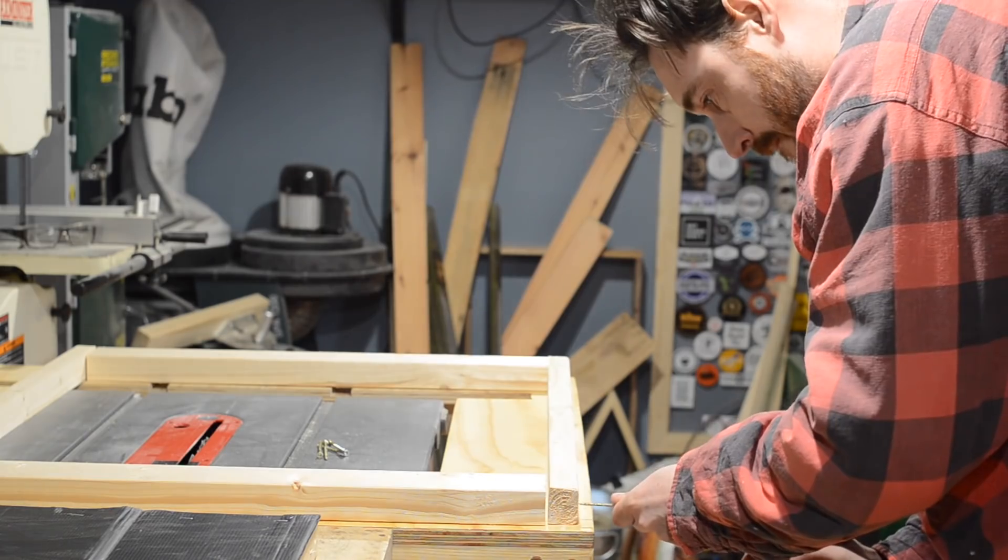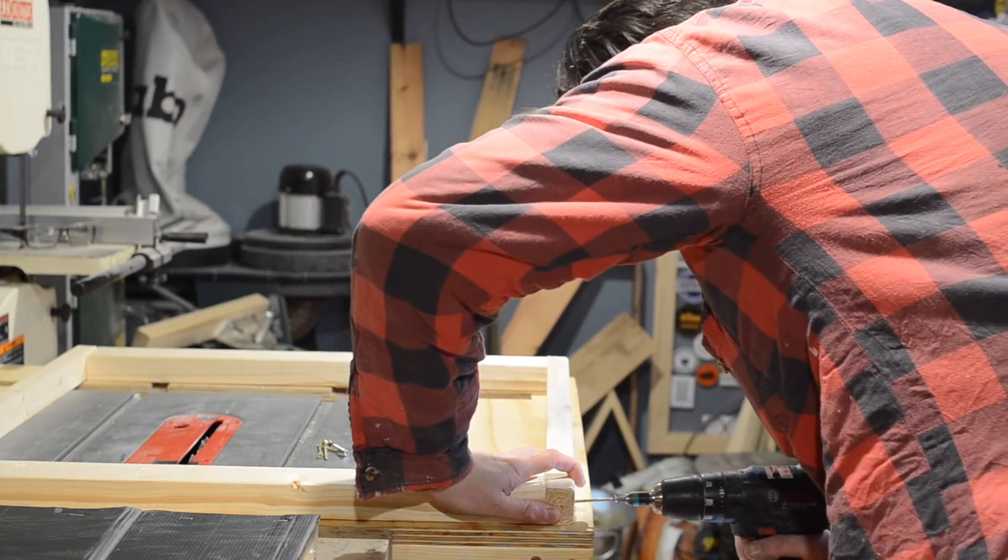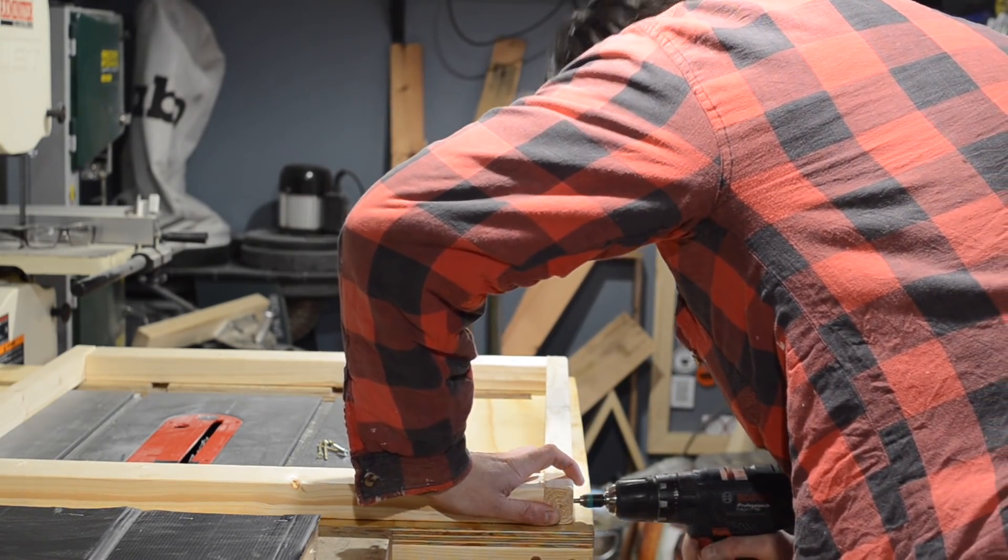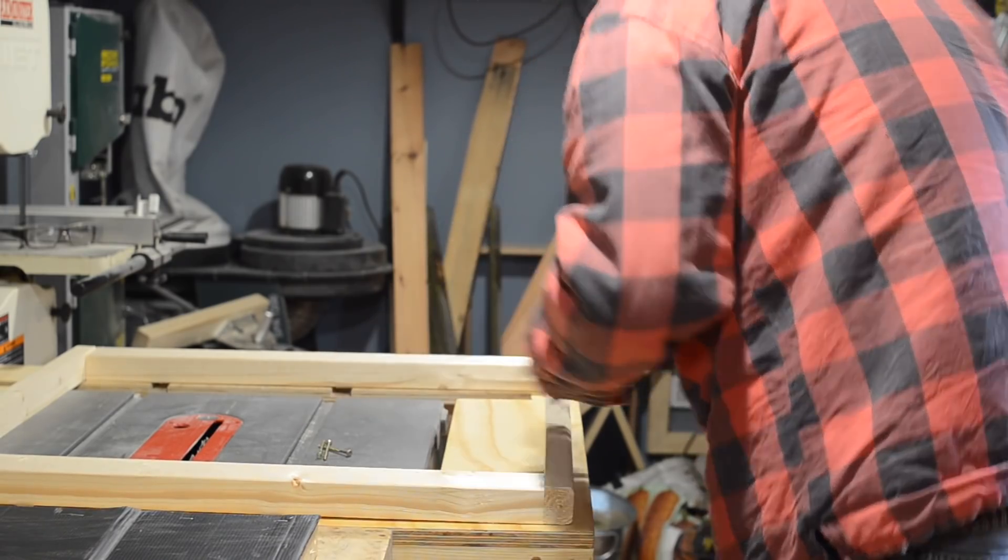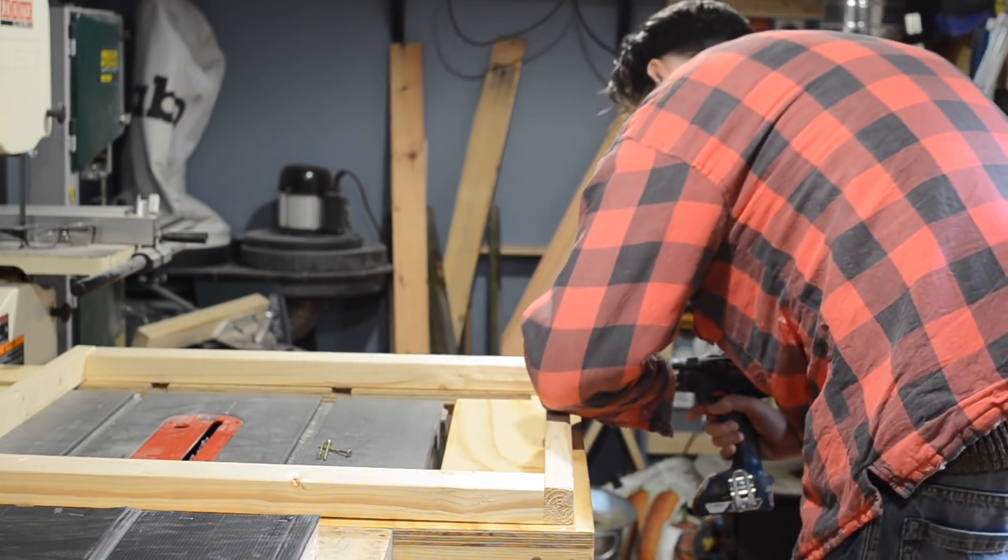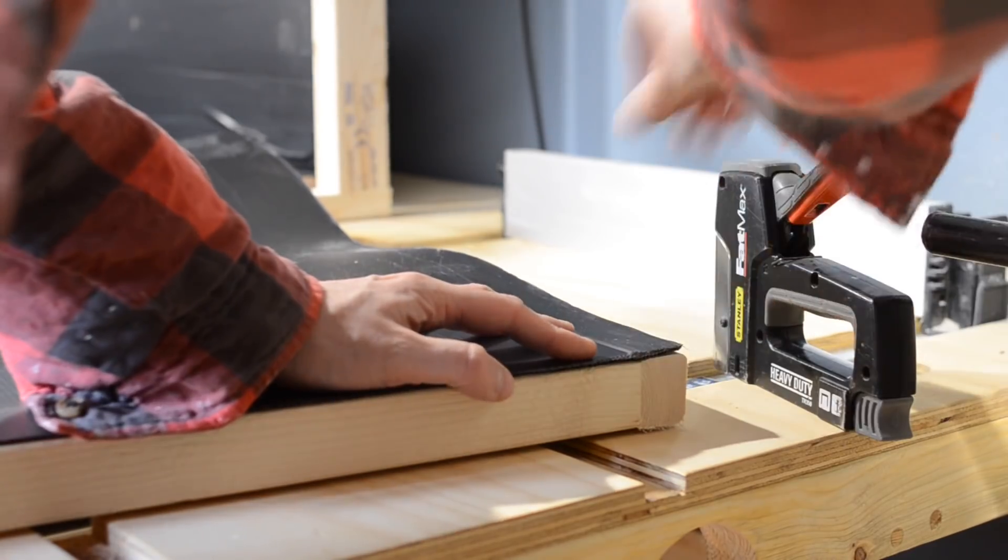Now I want to knock up two more frames and these are to go on either end so they're going to be as tall as the unit and as wide as it. And with two of them made I can then get them sheathed in the plastic in exactly the same way.